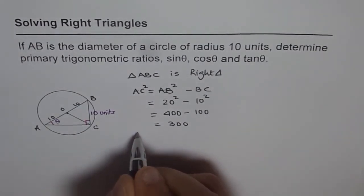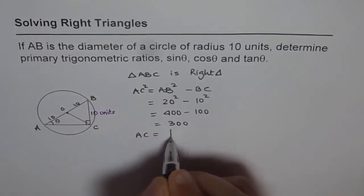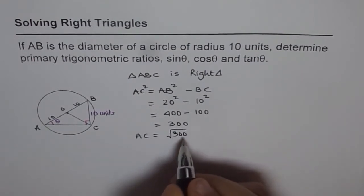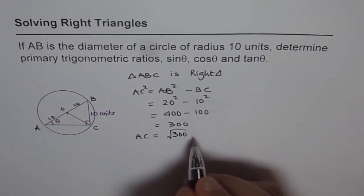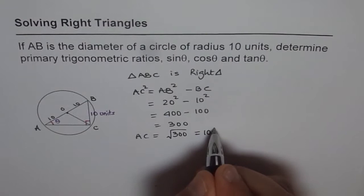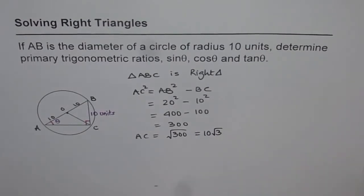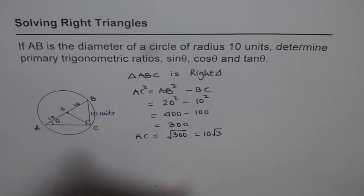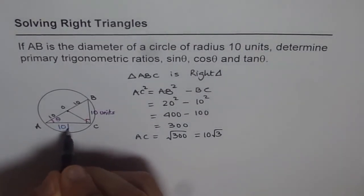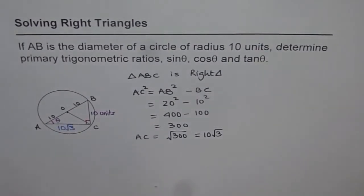Therefore AC is equal to square root of 300, which is 3 times 10, or we can write 10√3. So that gives us the value of AC, which is 10√3.